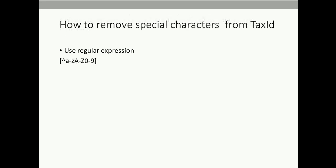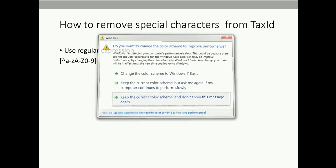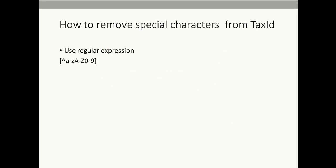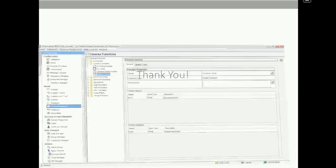Before the demo, let's see how to remove special characters from the tax ID. A tax ID can contain special characters such as hyphen, ampersand, hash sign, at sign, or currency symbols like the dollar symbol. To remove such special characters, we use a regular expression that looks like lowercase a-to-z, uppercase A-to-Z, and zero-to-nine. Apart from those characters, everything else gets removed. Now let's go to the MDM hub and see how to achieve this.